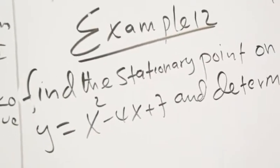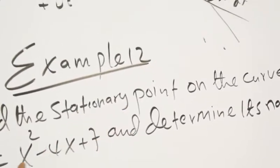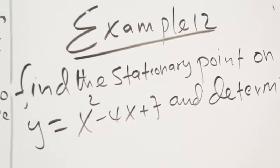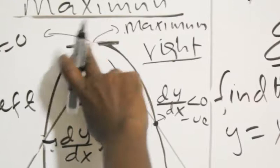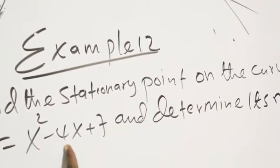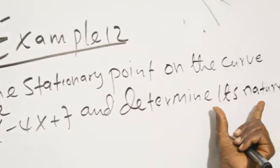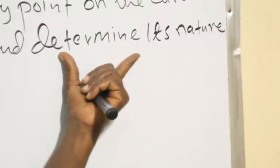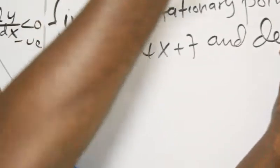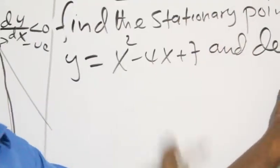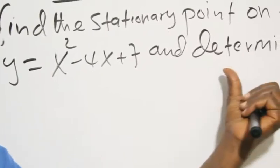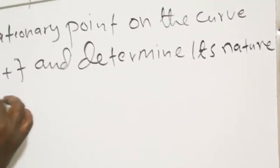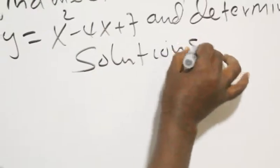A point of inflection on the curve means the gradient does not change sign. This is how we put the sign on a table and determine the nature of the stationary point — whether it is a minimum, maximum, or point of inflection. We are going to show you how to do this using an example.